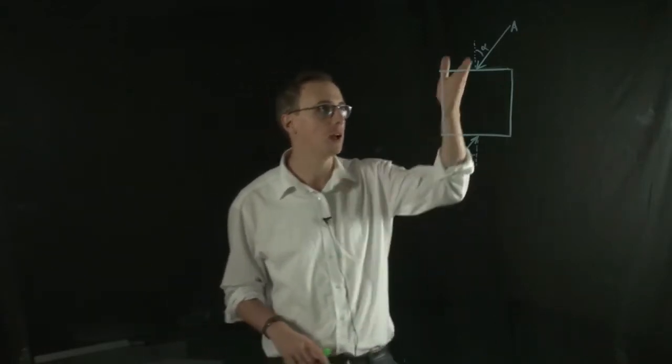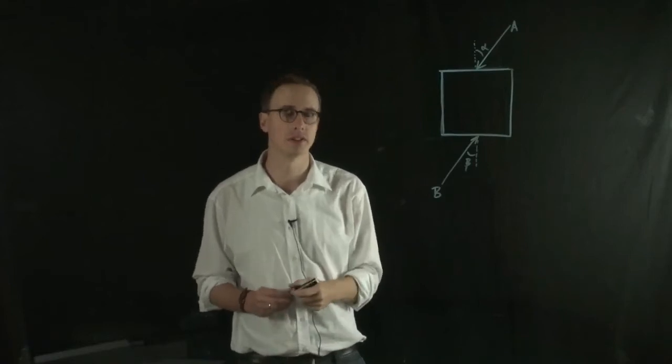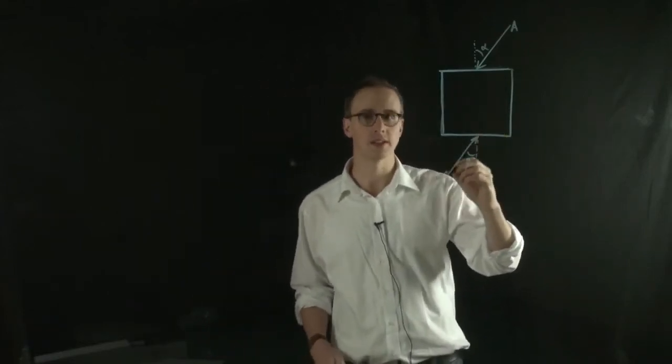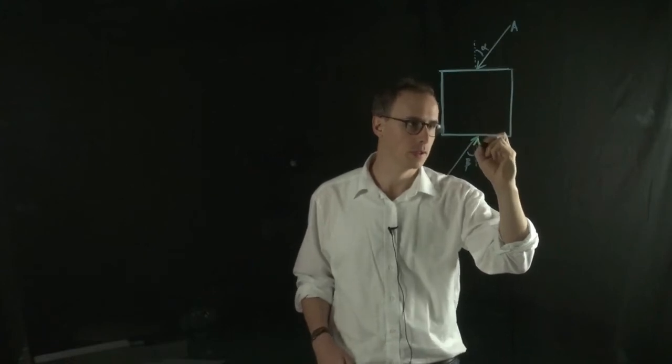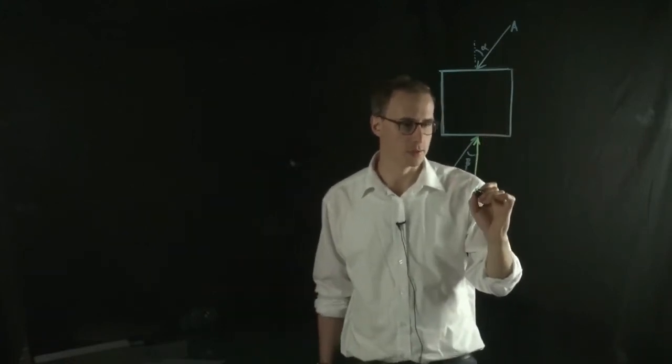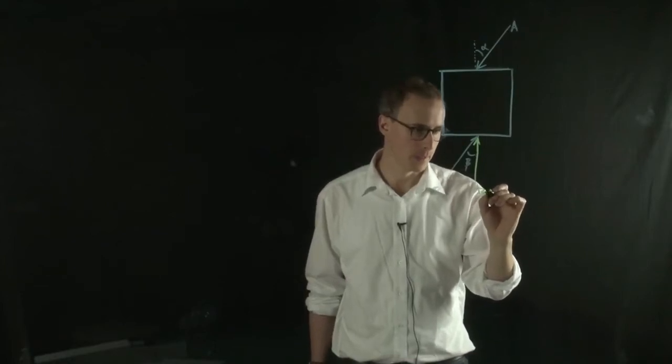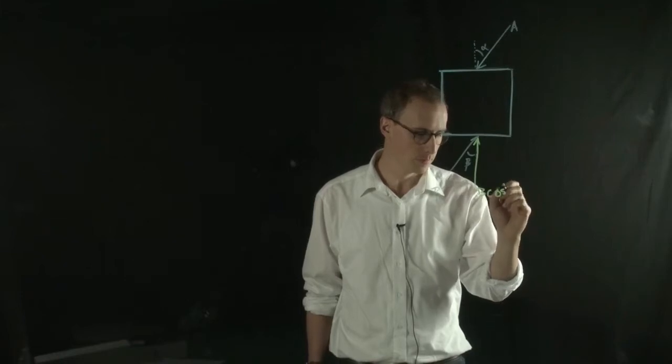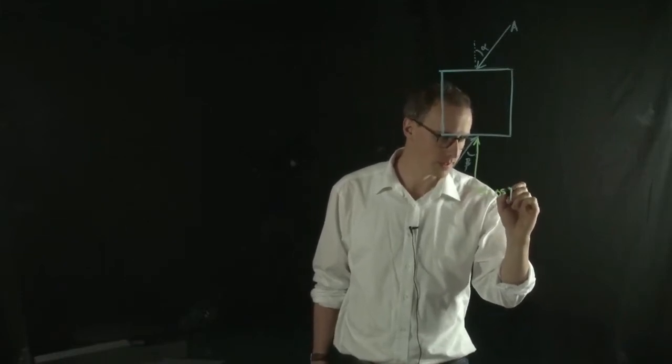So let's rotate A and B into the vertical reference plane. And to do that, we know that B has a vertical component. And that vertical component is equal to B cosine beta.